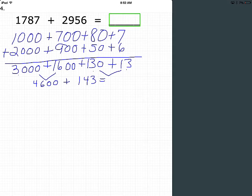And then we add to get our final sum: the ones 3, the tens 4, the hundreds 7, and the thousands 4. 4743.